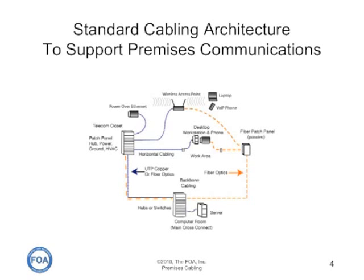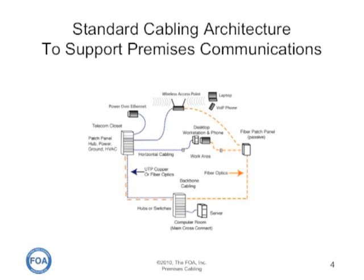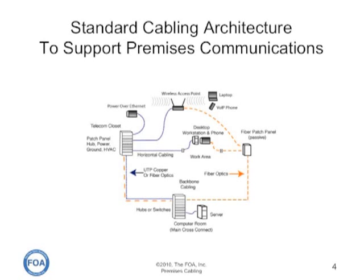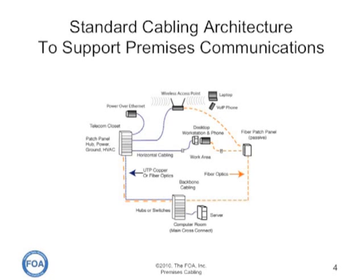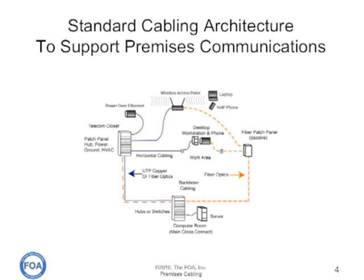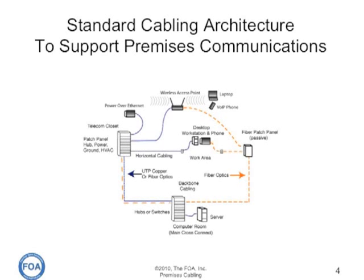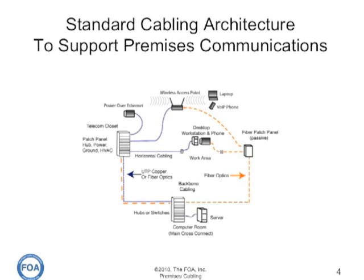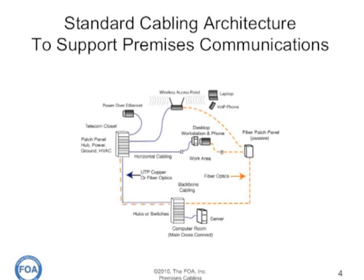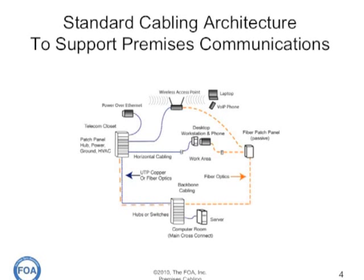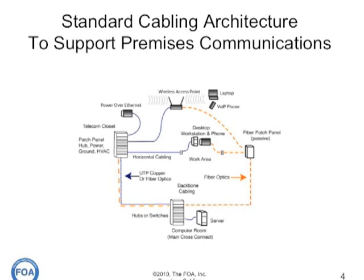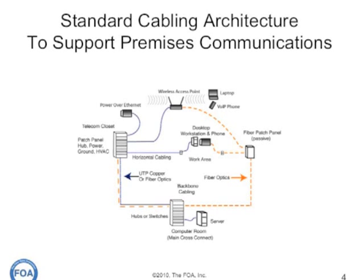Here's a typical architecture for a structured cabling or premises cabling system built to structured cabling standards. There's basically an equipment room or computer room that connects over backbone cabling to wiring closets, telecom closets, or telecom rooms, which include patch panels, hubs, power, ground, and other electronics that connect via horizontal cabling directly to workstations or to wireless access points. Cabling standards also include things like Power over Ethernet, which allows you to power devices over the cable you're sending data on. This is a typical diagram, but it can be changed a lot even within the realm of the standards.